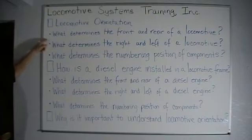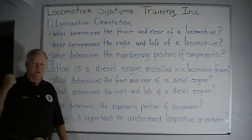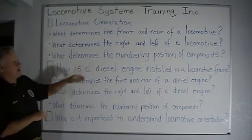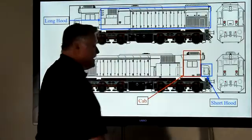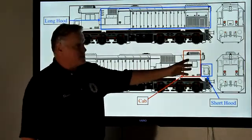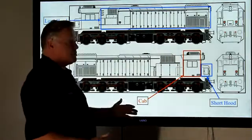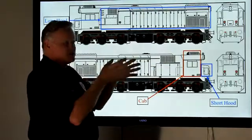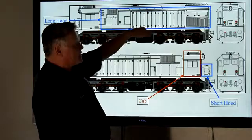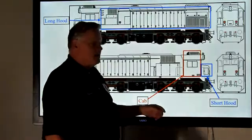So, what determines the front and rear of the locomotive? The letter F. The FRA rule we just read determines the front and rear — specifically, the letter F designates the front. Now, what determines the right and left side of the locomotive? Let's assume we're running short hood forward. With short hood forward, that's the front. Here's the key point: you're the engineer, sitting in the cab, facing the windows. As you're sitting in the engineer seat looking forward, your right is the right side of the locomotive, and your left is the left side of the locomotive. So we've established the front, the rear, the right side, and the left side.